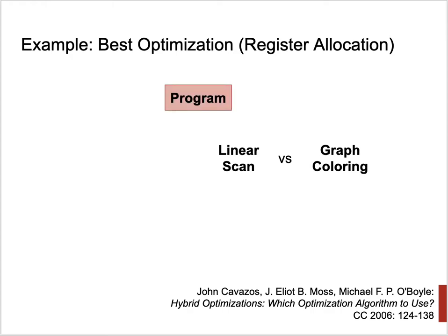Notice that in this case we are not classifying entire programs. These two optimizations, linear scan and graph coloring, are intraprocedural — they apply to functions. Cavazos applied his decision procedure to Java methods, not Java classes. For each method, we make the decision. That's another granularity at which we can make predictions.